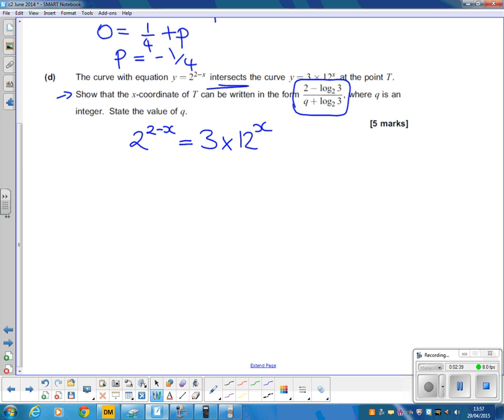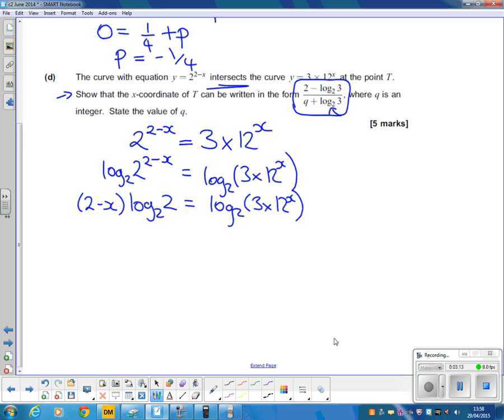Well, let's have a look. What they've got is logs to base 2. So our first step would be to take logs to base 2. So log base 2 of 2 to the 2 minus x equals log base 2 of 3 times 12 to the x. We can now, on the left-hand side, bring 2 minus x to the front. Log base 2 of 2 is 1, so that's going to go.